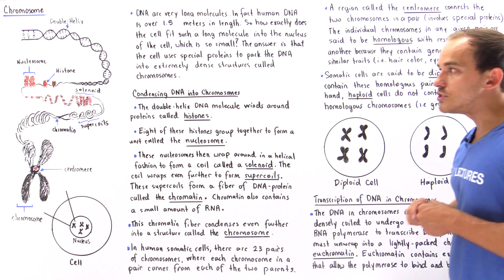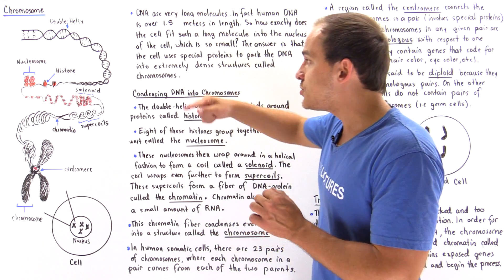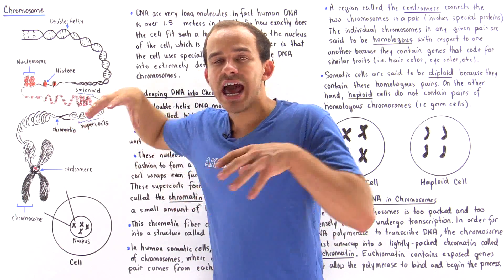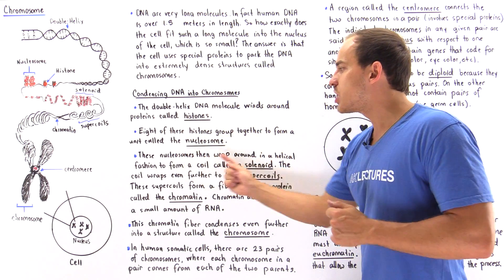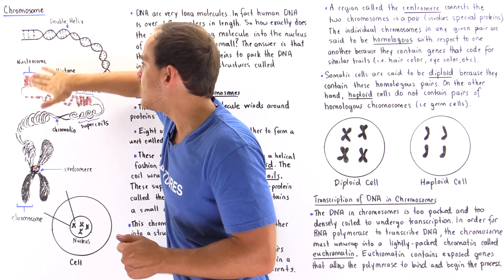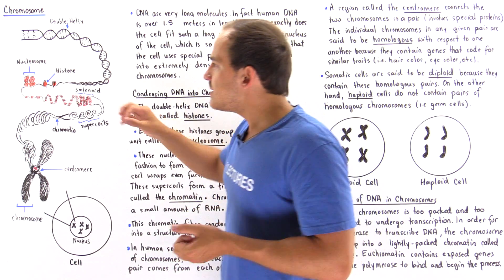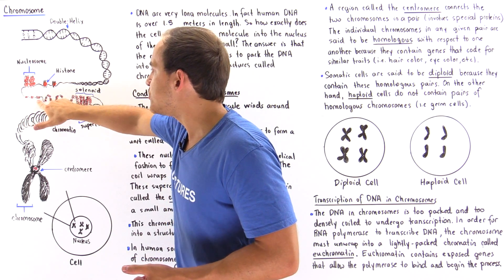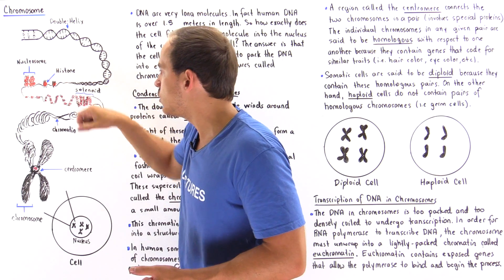Next, what the cell does is it takes eight of these histones, where each histone contains the DNA coiled around it, and groups them into a single structure known as the nucleosome. Each one of these structures visible in the diagram is our nucleosome.